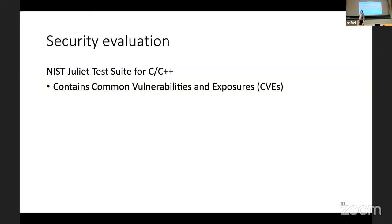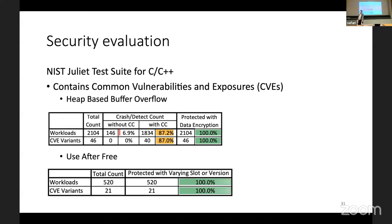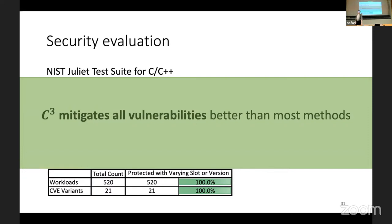The security evaluation used the Juliet test suite for C and C++, which contains files that on purpose contain errors to test whether they are mitigated. Testing heap-based buffer overflow: without data encryption — using only the cryptographic address — they already mitigated 87% of issues. Adding data encryption, they mitigated 100% of issues. For use-after-free, they mitigated all tested vulnerabilities. So C-cubed mitigates all vulnerabilities and does so better than most other methods.